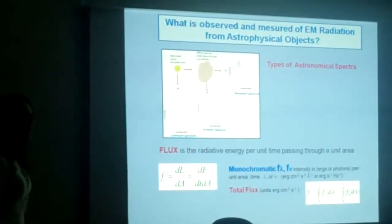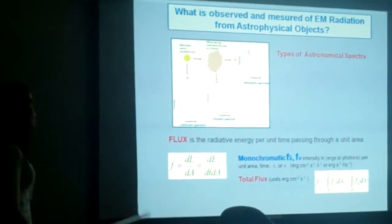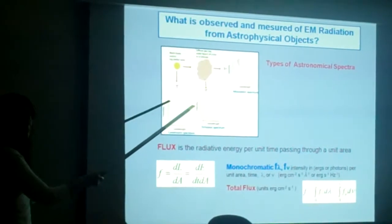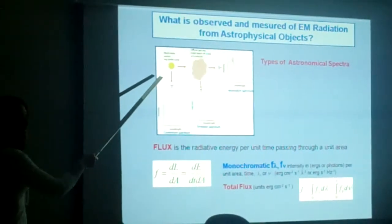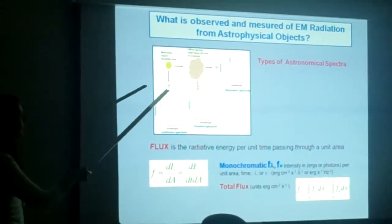If we look directly to the object, for example a star, we can see the continuous spectrum. For example, in the case of this star, we can see the black body emission of the star.